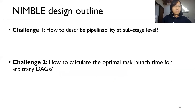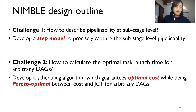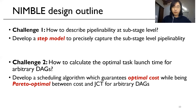This slide provides an overview of how Nimble addresses these two challenges. For challenge one, we developed a step model to precisely capture sub-stage-level pipeline-ability. For challenge two, we developed a scaling algorithm that guarantees optimal cost while being Pareto optimal between cost and JCT for arbitrary DAGs. In the next few slides, I will talk about these two designs in more detail.